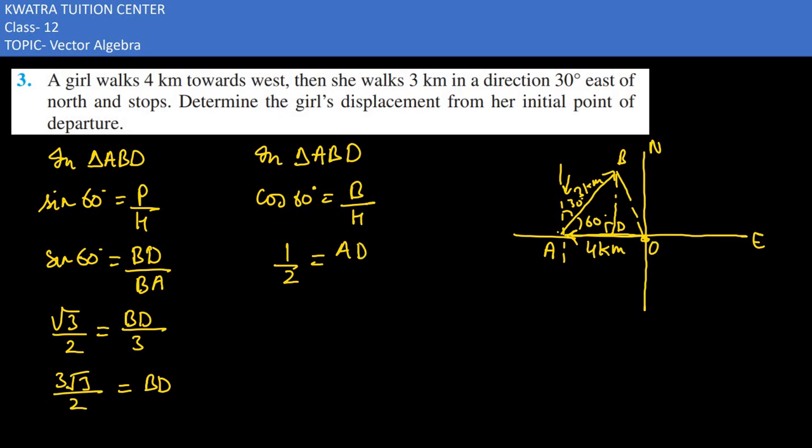Base in this triangle is AD. Hypotenuse is 3. So our value becomes 3 by 2 as AD, meaning 3 by 2 km for us.